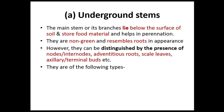Underground stems are so called because the main stem and its branches lie below the surface of the soil and store food material. They help in perennation — meaning they survive even in dry conditions, and when conditions are favorable they germinate and give rise to new plants. They are non-green and resemble roots, but they have nodes, internodes, adventitious roots, scale leaves, and axillary buds — which is why we call them stems.